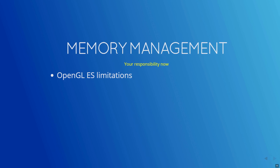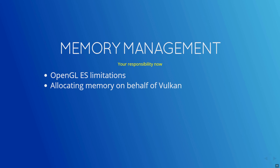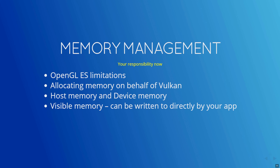In OpenGL ES, applications have rather limited control of memory — for the most part allocating memory in client memory or using specific device memory objects like VBOs. In Vulkan, your application has the opportunity and is required to perform host memory allocations on behalf of the Vulkan implementation. This can be useful for debugging and logging memory allocation. You'll find many of the API calls have an allocation parameter, allowing you to hook in your own allocator. In Vulkan, memory comes in two categories: host memory and device memory. Memory is always visible to the device and can be local to the device as well.